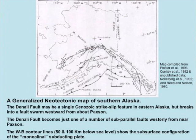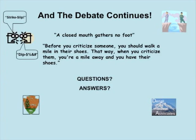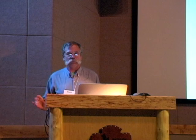Our new view of the Denali Fault System has traditional strike-slip action east of about Paxson or Richardson Highway, then blossoming out into a series of thrust faults and normal faults that take up the overall tectonic activity. This coincides well with the bending of contour lines shown here, and within the last six million years or so, this is what we think might be part of the story. Thank you very much.